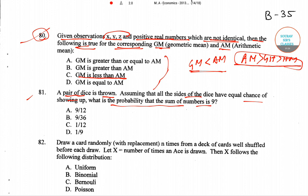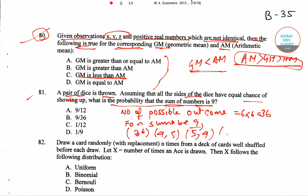For this, first we have to write down the number of possible outcomes, which equals 6 into 6 equals 36. Now for sum to be 9, as you can see, for the sum of the numbers to be 9, either it will be 3,6 or it will be 4,5 or it will be 5,4 or it will be 6,3.